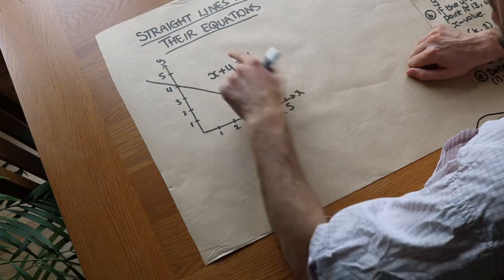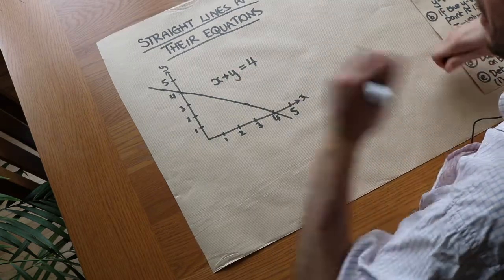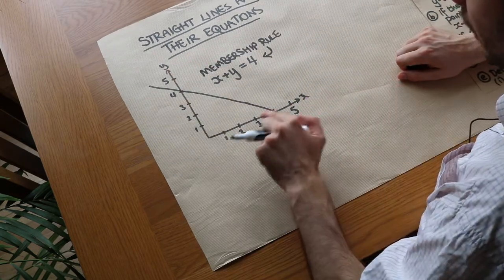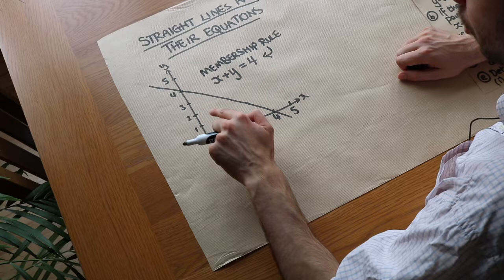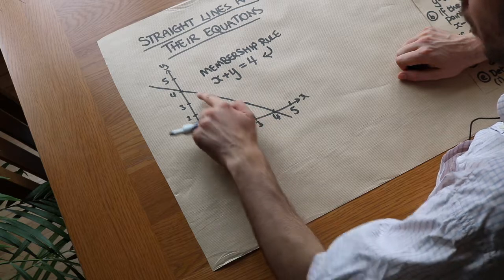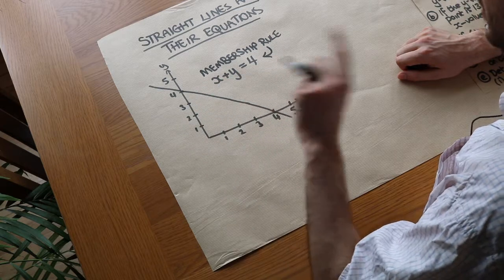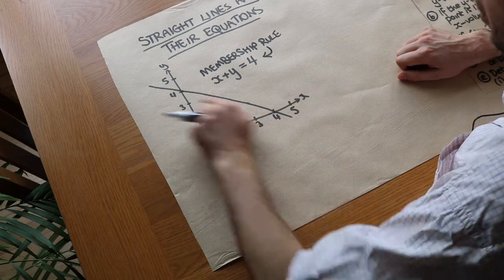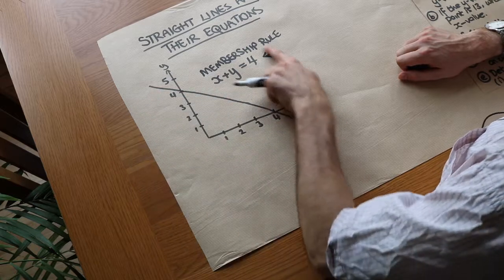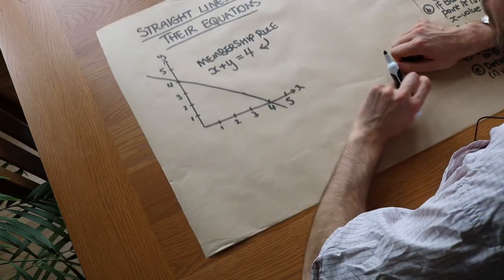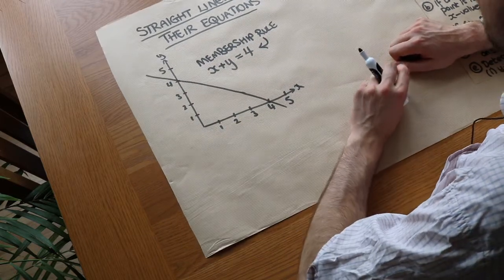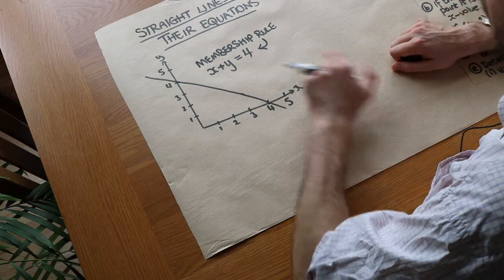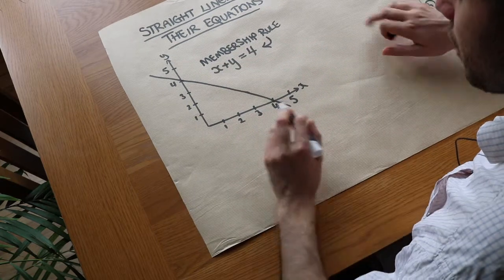Basically we can see this as a membership rule. If a particular point, say like 3, 0 or 1, 3 etc., wants to belong to this line it has to obey this particular membership rule. So let's consider a few points and see whether they can join the club because they obey this membership rule.